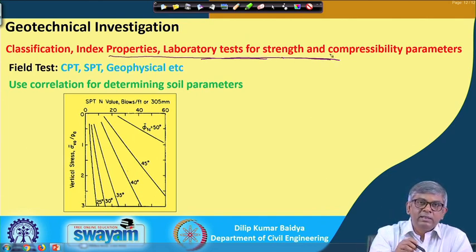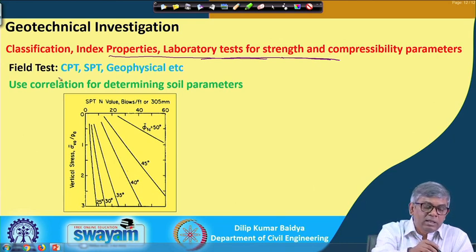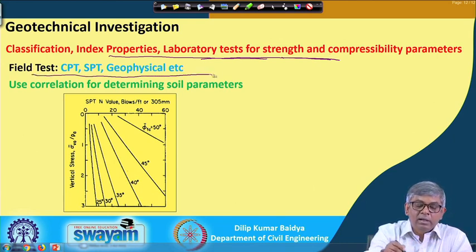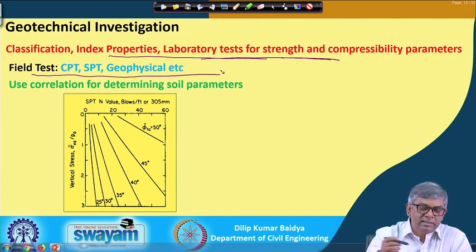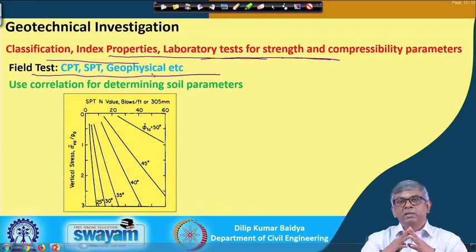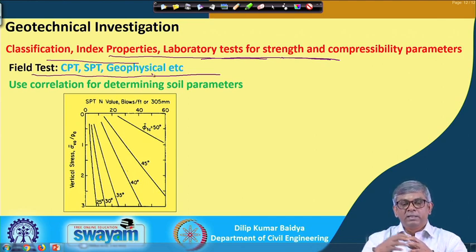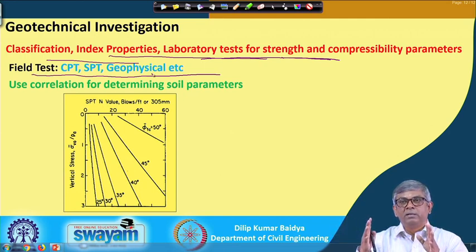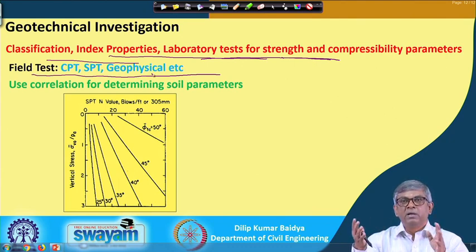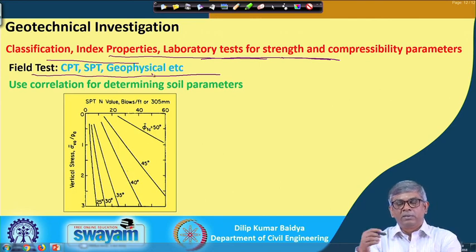Simultaneously, if possible, carry out a number of field tests — SPT, CPT, vane shear test, pressuremeter test, and others. There may be some correlation between soil properties and SPT or CPT values; check those and find out the values of soil properties. Compare with laboratory test results — if they vary too much, do more tests or apply engineering judgment to finally recommend the values of soil properties.